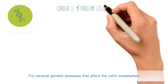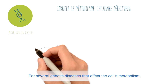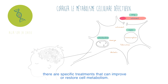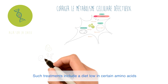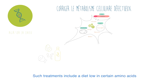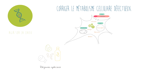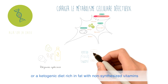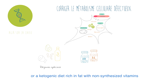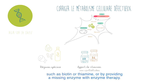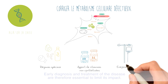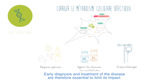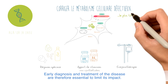For several genetic diseases that affect the cell's metabolism, there are specific treatments that can improve or restore cell metabolism. Such treatments include a diet low in certain amino acids, a ketogenic diet rich in fat with non-synthesized vitamins such as biotin or thiamine, or by providing a missing enzyme with enzyme therapy. Early diagnosis and treatment of the disease are therefore essential to limit its impact.